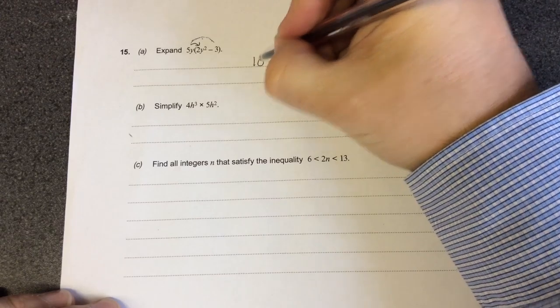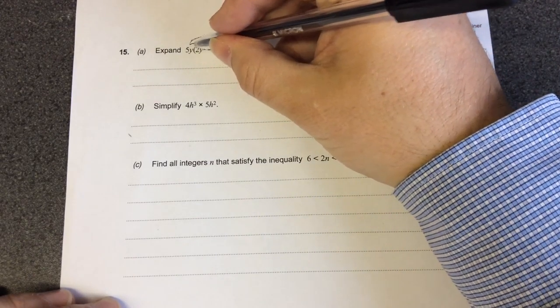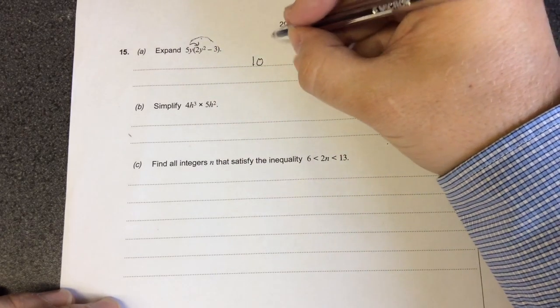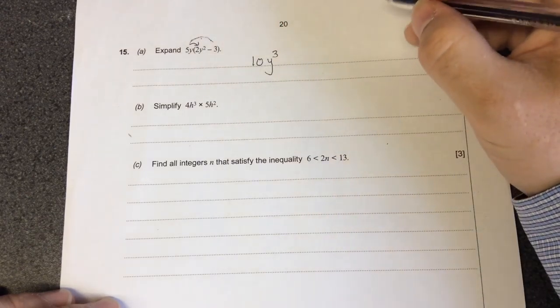5 times 2 is 10 and then y times y squared. We've got 1y outside and 2 inside the bracket. And when you're multiplying this you add the powers. So 1 add 2 makes 3. So there's 10y cubed.